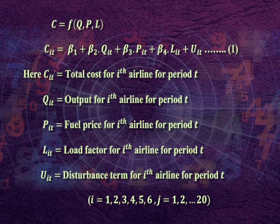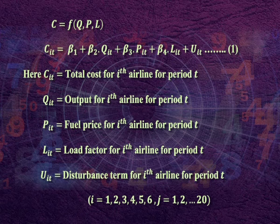Here, C_it = total cost for i-th airline for period t; Q_it = output for i-th airline for period t; P_it = fuel price; L_it = load factor; and U_it = disturbance term. Here i = 1, 2, 3, 4, 5, 6 and t = 1, 2 up to 20. The model in equation 1 is called the constant coefficient model, where β₁ is the intercept, the same for all airlines, assuming uniform levels of service. We may run this regression and find OLS estimates of the betas to estimate the cost function.